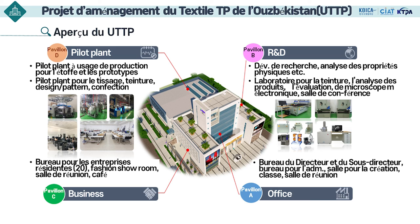Dans le pavillon C abritent des bureaux pour les entreprises résidentes, le fashion showroom, une salle de conférence et un café. Dans le pavillon D se trouve le pilot plant pour la production des prototypes de tissus et de vêtements, avec le pilot plant pour le tissage, la teinture, le design et le pattern et la couture, où la formation, la production des prototypes et la R&D sont menées en même temps.